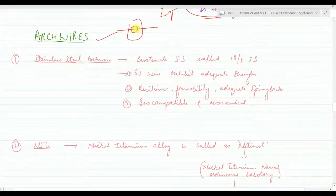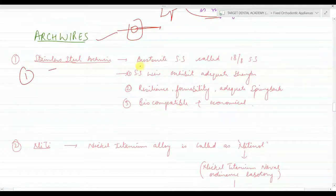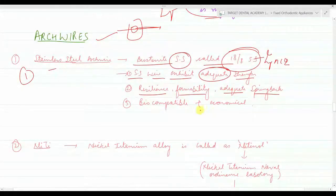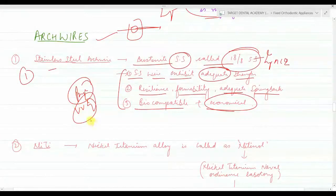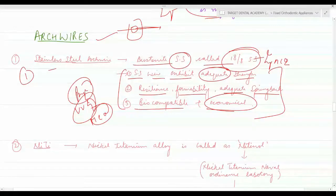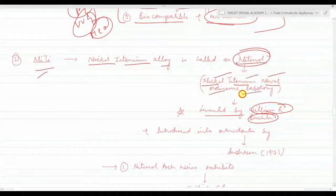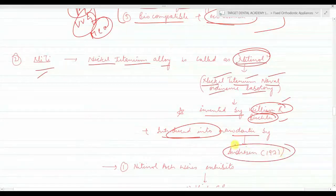Various types of arch wires are used. First, stainless steel arch wire — the austenite stainless steel is called 18/8 stainless steel (MCQ). It exhibits adequate strength and resilience, formability, adequate spring back, biocompatibility, and is economical. Next is the nitinol wire — nickel titanium alloy — first invented by William R. Buehler and introduced into orthodontics by Andreasen in 1971. Nitinol stands for Nickel Titanium Naval Ordnance Laboratory.